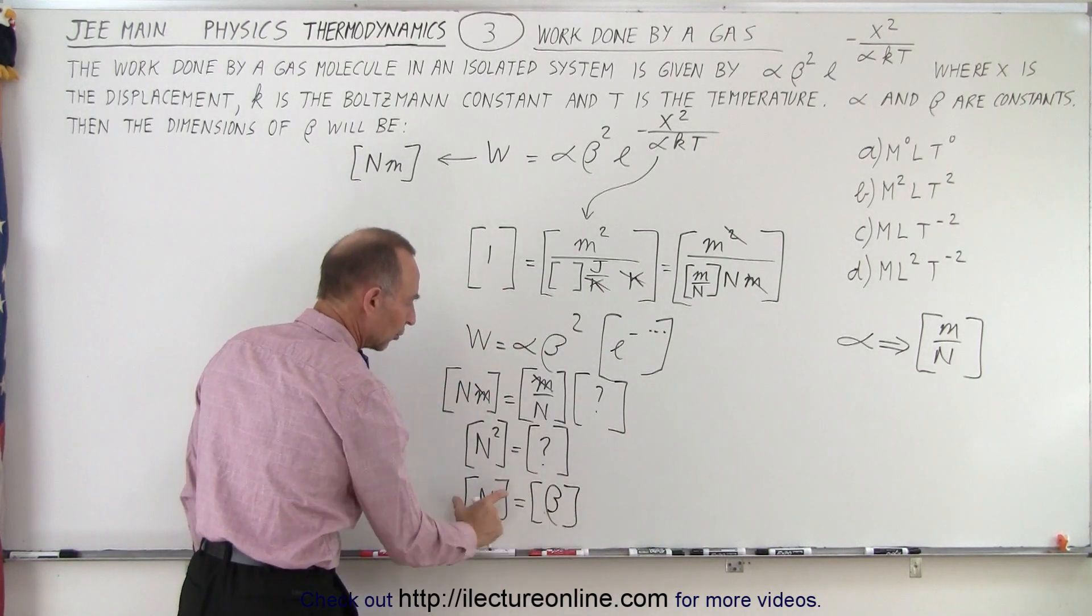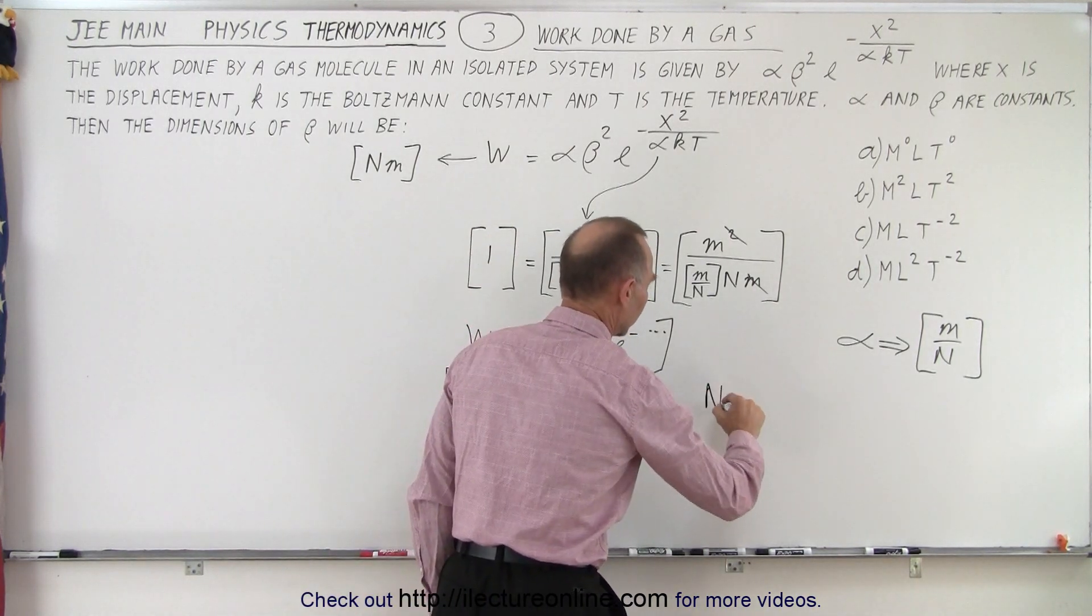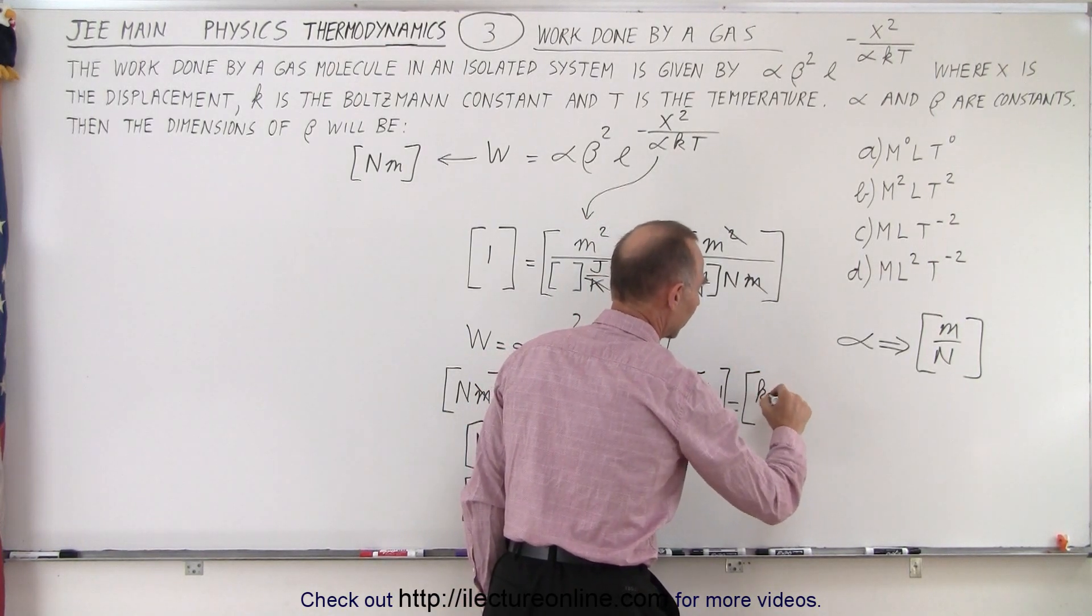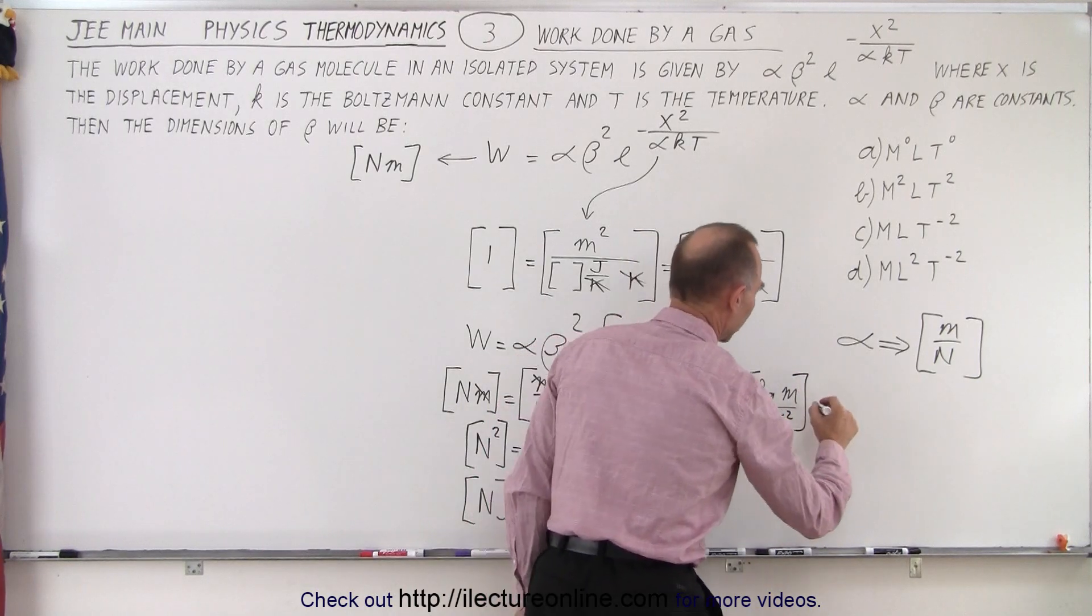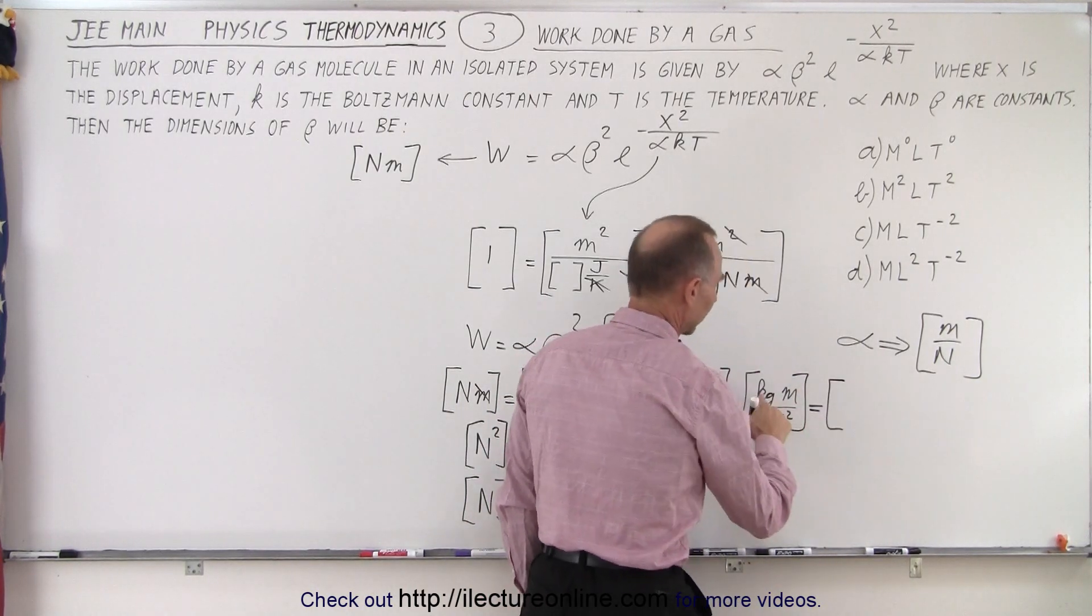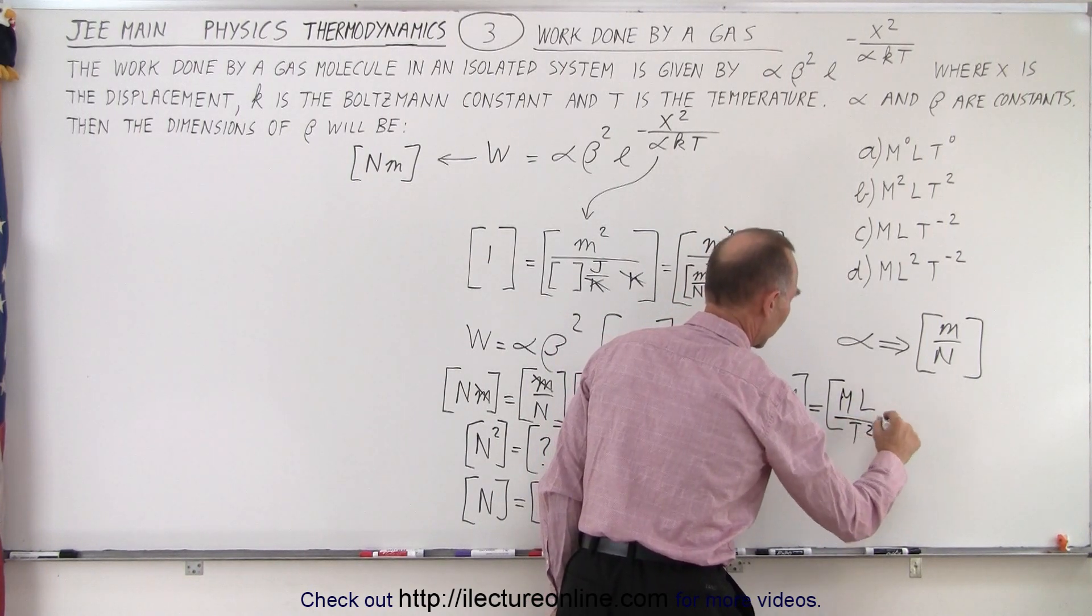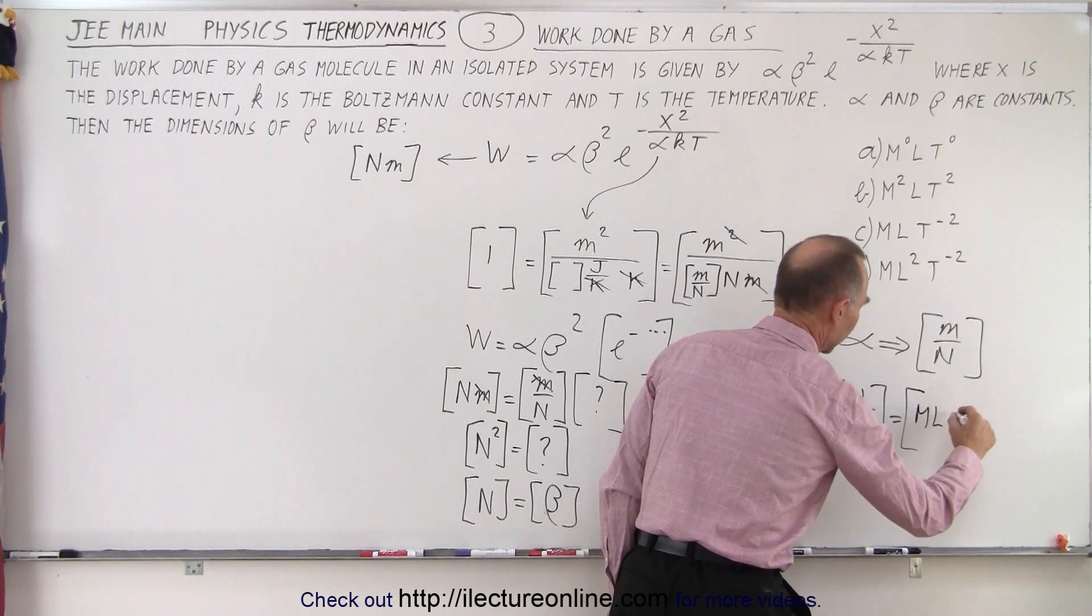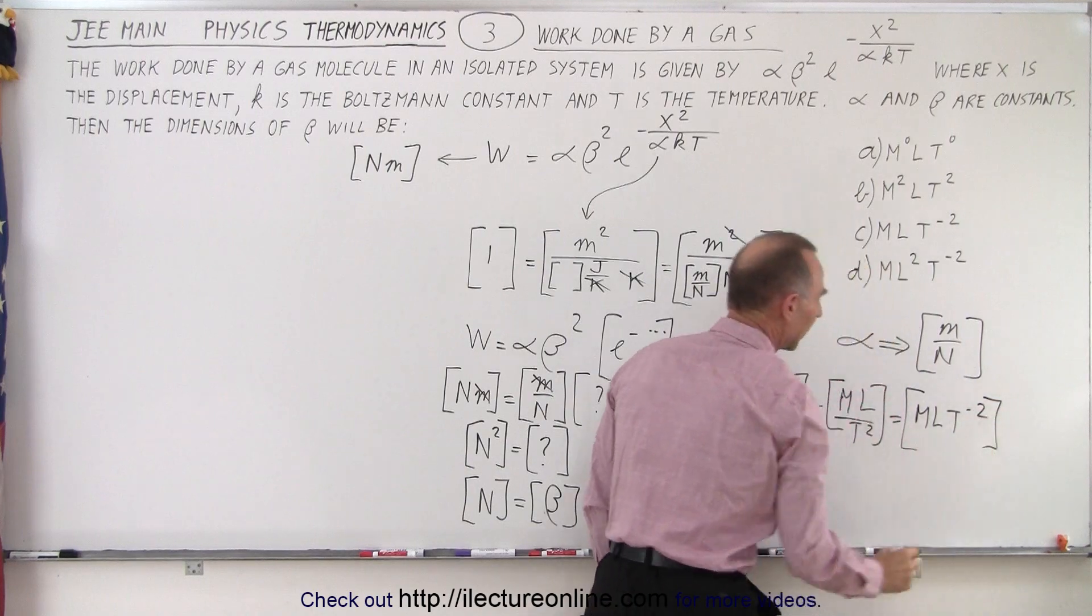Okay, so now we know that the units associated to beta is Newtons, and Newtons is equal to, or the units of Newtons, is equal to kilograms, meters per second squared, so that is, if we now convert that to mass, length, and time squared, like this, or if you write it all together, we can go mass, length, time to the minus two. That should be a two. There we go. All right?